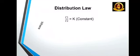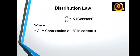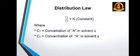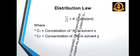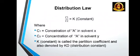That is C1 by C2 is equal to K, where K means constant. C1 means concentration of A in solvent X, that means concentration of organic solvent. C2 means concentration of A in solvent Y, that means concentration of aqueous solution. K is the constant, also called the partition coefficient, and also denoted by distribution constant, that is Kd.